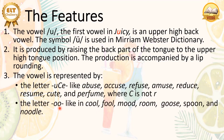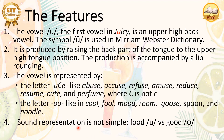We also have the letter combination OO, like in 'cool', 'mood', 'room', 'goose', 'spoon', and 'noodle'. Our tongue and jaw muscles are tense in these words as well. However, we have to remember that sound representation is not simple. We have 'food' and 'good' — the spelling of these two words is almost the same, but 'food' is pronounced with the /u/ vowel, which is tense, whereas 'good' has a different vowel. So 'food' and 'good' are different, although their spelling is more or less the same.